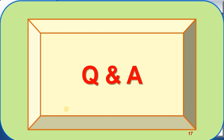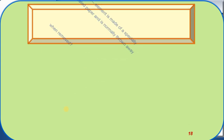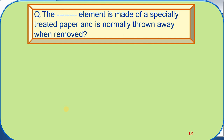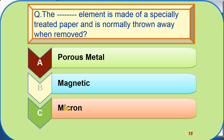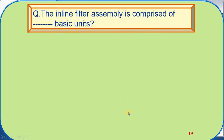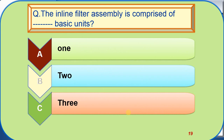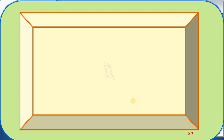This was all about the hydraulic filter. Now for the question-answer section. Question one: The element made of specially treated paper and normally thrown away when removed is — Option A: porous metal, Option B: magnetic, Option C: micron type. Question two: The inline filter assembly is comprised of how many basic units? Option A: one, Option B: two, Option C: three. The correct answer is three. Good luck, students. Thank you.